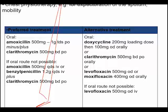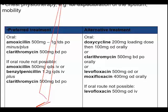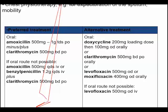Going back to the earlier question: if you prescribe amoxicillin and clarithromycin, what does the macrolide — clarithromycin — cover? A macrolide covers atypical bacteria, which include Legionella and Chlamydia — those are atypical bacteria.